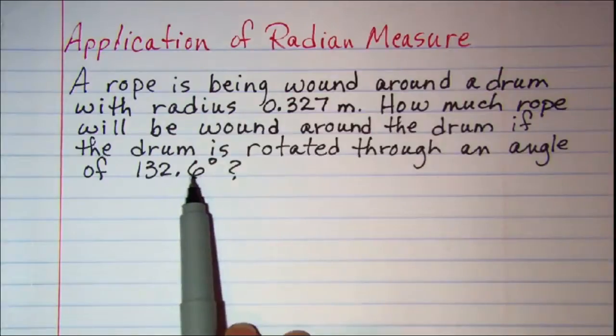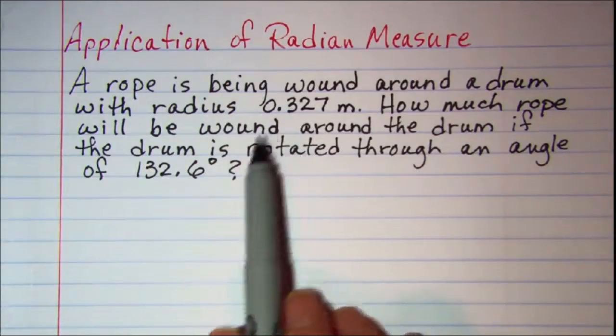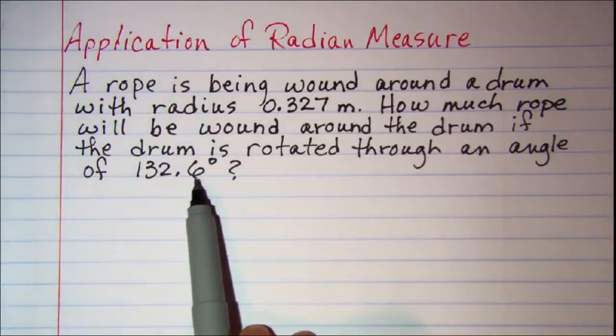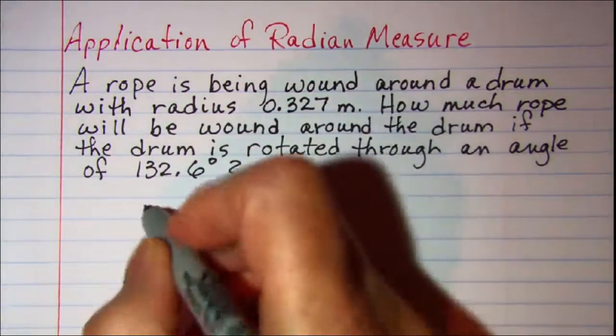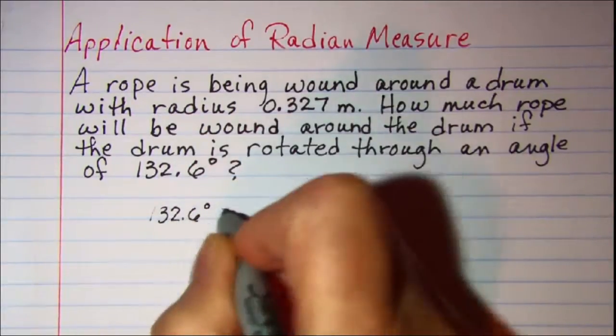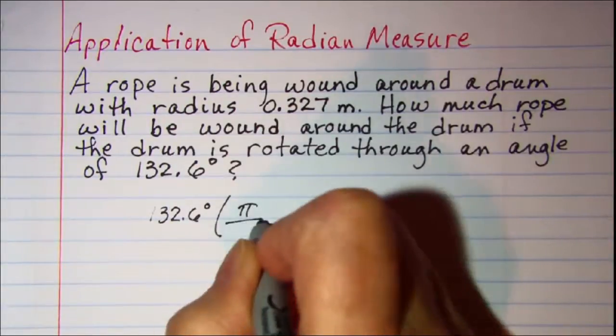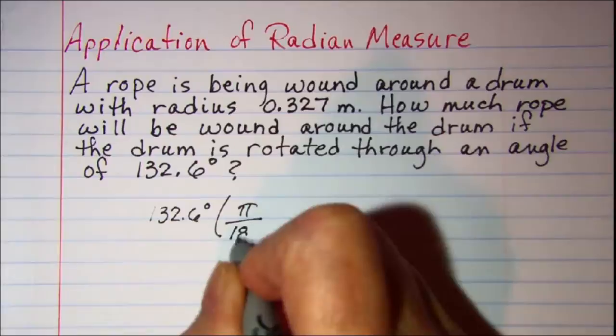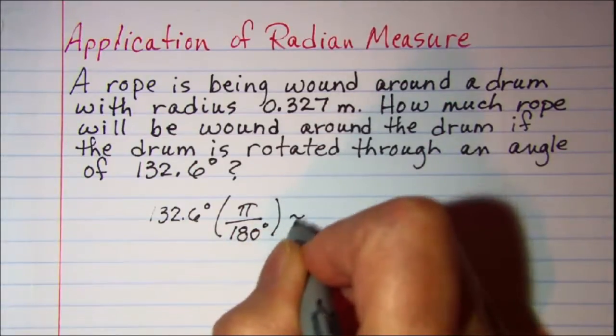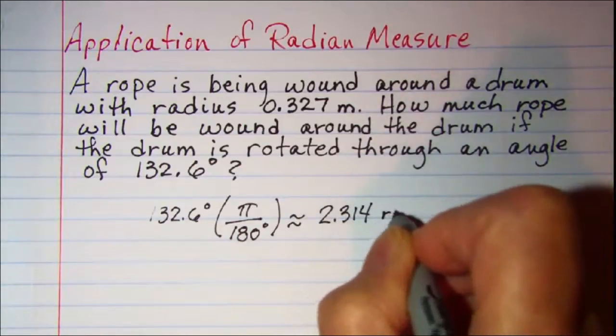Now first, since we're looking for an arc length, we want to convert this 132.6 degrees to radian measure. So we would multiply by pi radians over 180 degrees. This gives us approximately 2.314 radians.